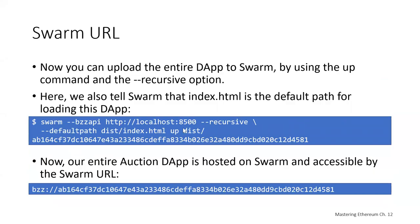Running the command with the recursive upload, our entire auction DApp is hosted on Swarm and accessible by URL. We can now access it and run it like a web application on Swarm without having to have a centralized web server. You can do something very similar with IPFS as well.